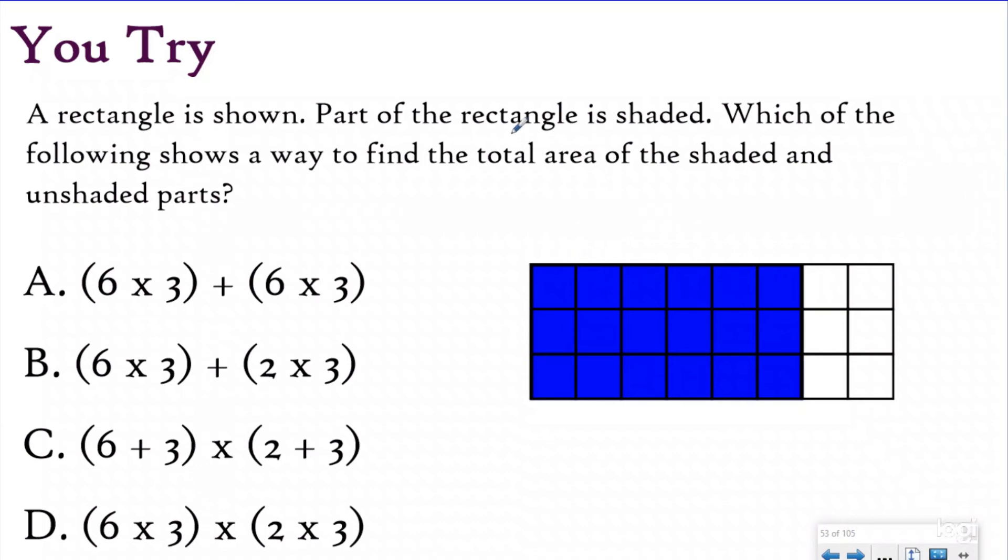The question says a rectangle shown, part of the rectangle shaded, which of the following shows a way to find the total area of the shaded and unshaded parts. I know it's a rectangle. I know I want to find the total area. And so I'm going to be using my distributive property knowledge. If I label this, I know my width is three units. And I know my length is eight. But I can see they decomposed my eight into six units for my blue, and two units for my white. So to find this, I'm going to have six groups of three. And then I'm going to add that to two groups of three.